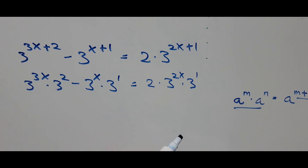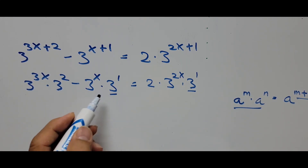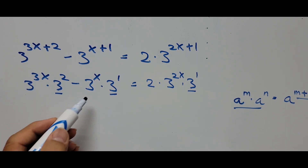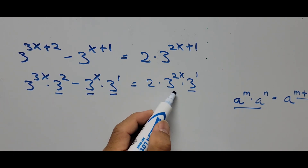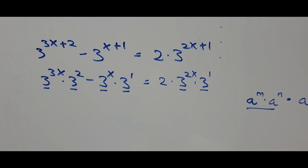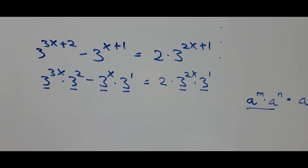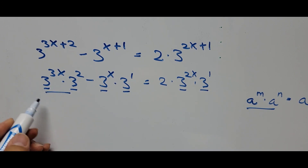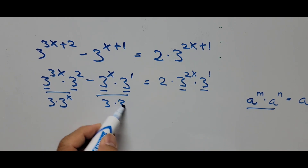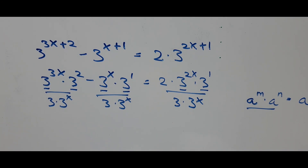Now notice that on each term we have 3 to the power 1, or just 3, in common. We also have 3 to the power x in common on each term. So we divide the whole equation by 3 and also by 3 to the power x — dividing all terms by 3 times 3 to the power x.